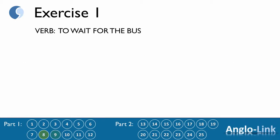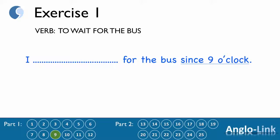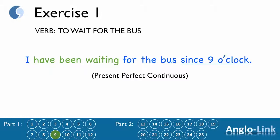Number 9: 'I ___ for the bus since 9 o'clock.' Answer: 'I have been waiting for the bus since 9 o'clock.' Present perfect continuous.